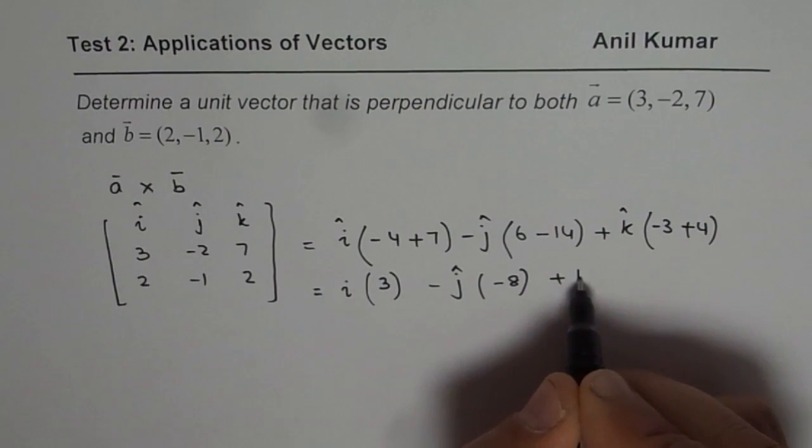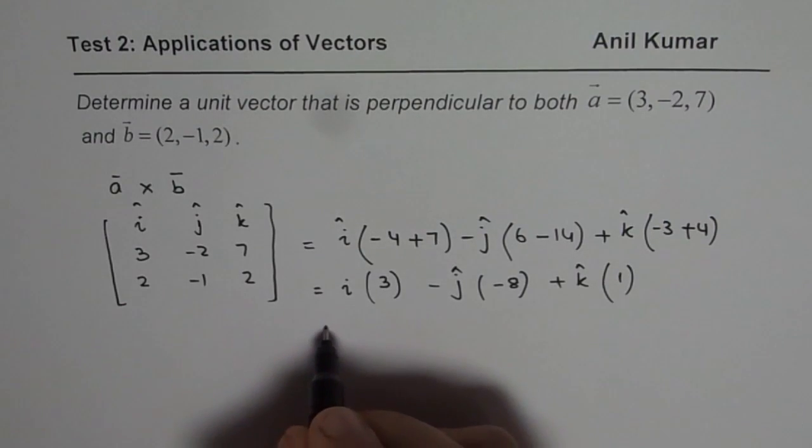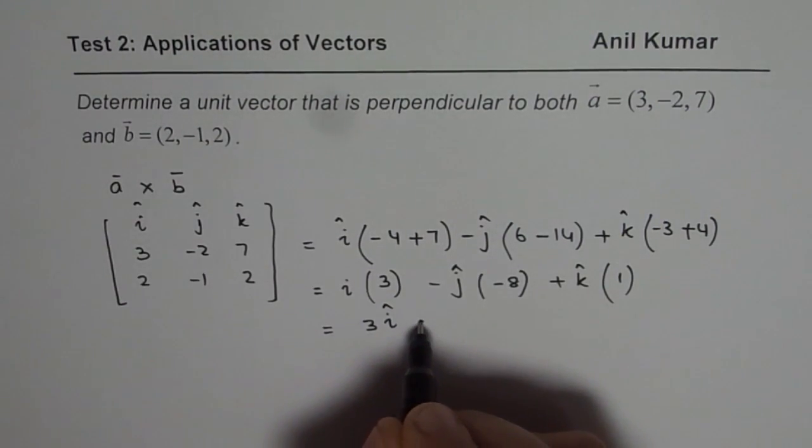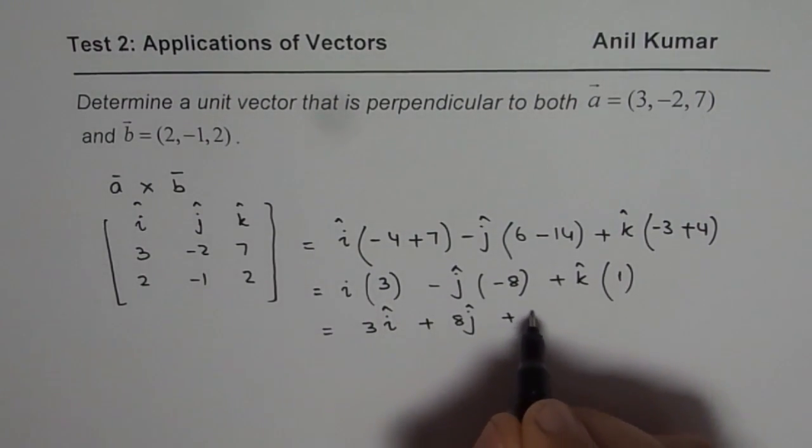Plus k times 1. So we could write this as 3i plus 8j plus k.